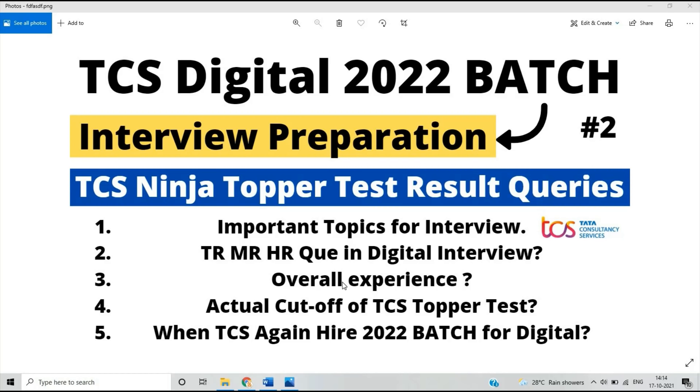The actual cutoff of TCS topper test is only one question. If you solve one coding question with public test cases and private test cases, they will surely mail you with a result or interview invite for digital opportunity. It also depends on the TCS team as they will check all parameters before sending the interview invite. I talked to many candidates who said they only solved one coding question in the TCS ninja topper test with public plus private test cases passed. There are chances of mail coming, so wait for some time because they are sending continuously.